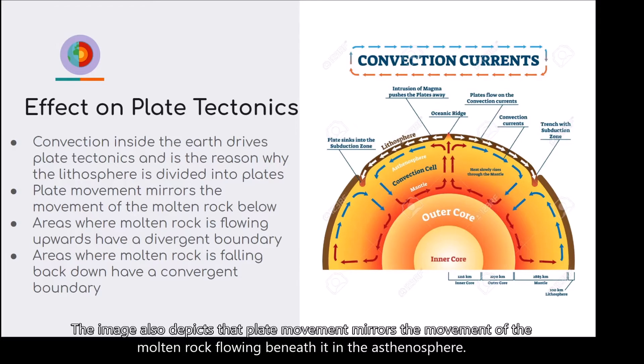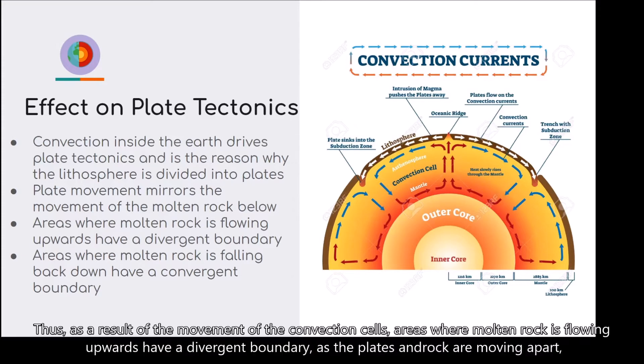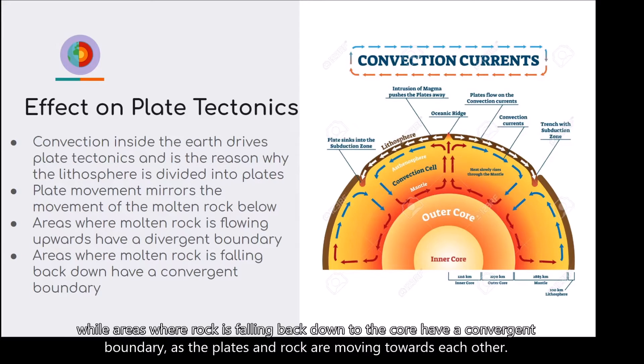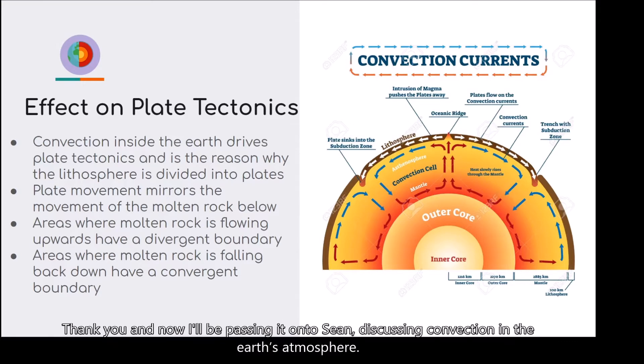The image also depicts that plate movement mirrors the movement of the molten rock fluid beneath it in the asthenosphere. Thus, as a result of the movement of the convection cells, areas where molten rock is flowing upwards have a divergent boundary, as the plates and rock are moving apart, whereas areas where rock is falling back down to the Earth's core have a convergent boundary, as the plates and rock are moving towards each other. And now I'll be passing it on to Shawn, discussing convection in the Earth's atmosphere.